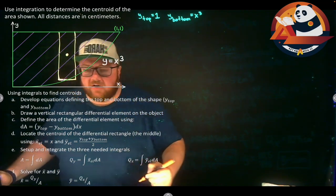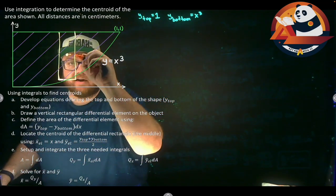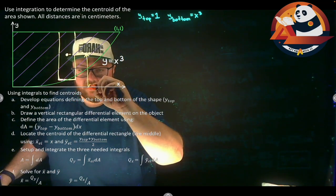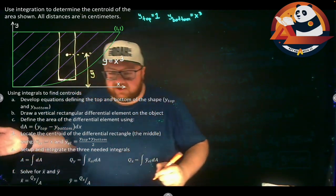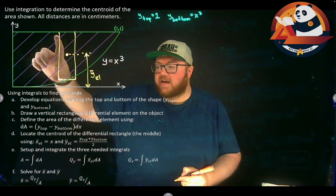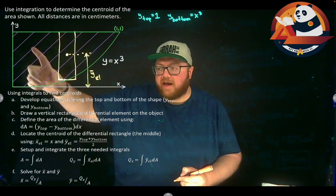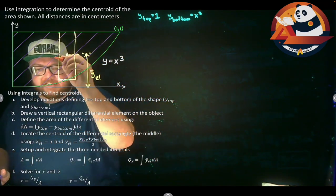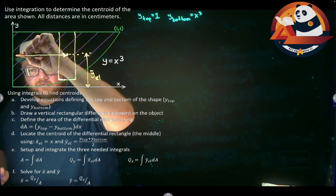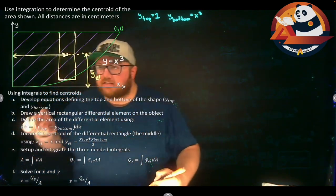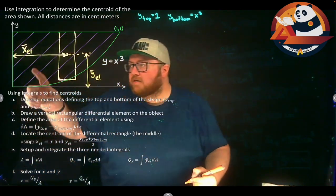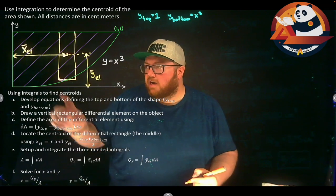We can put in an infinite number of these rectangles and add them all up. The middle of each one gives us the centroid of that element. Measuring down to the x-axis gives us ȳ_el — the centroid location of just this differential element. The distance from that centroid over to the y-axis is an x distance, which we call x̄_el.